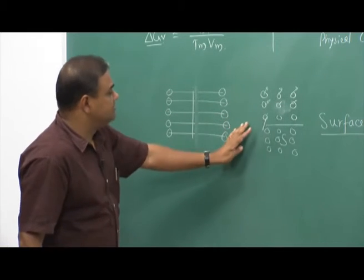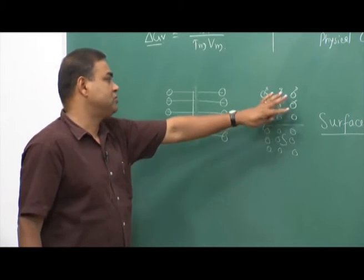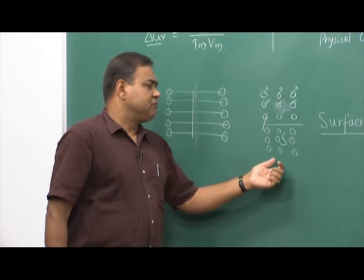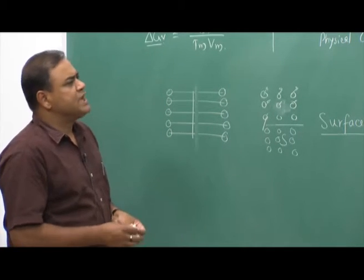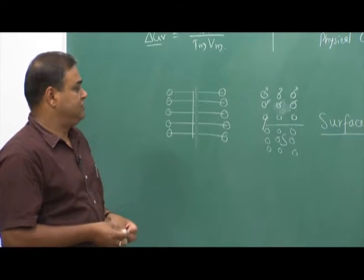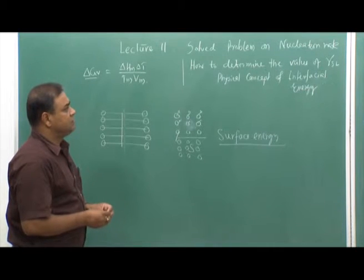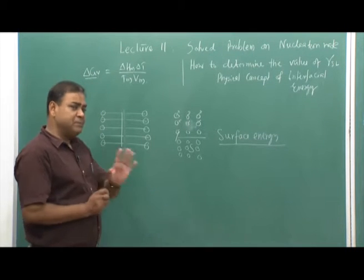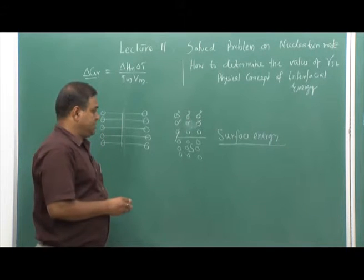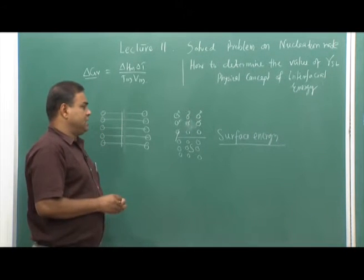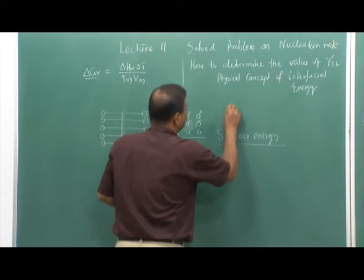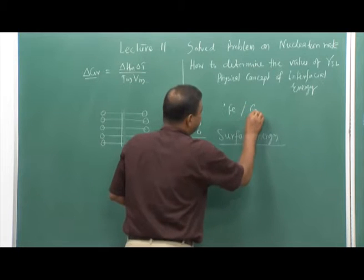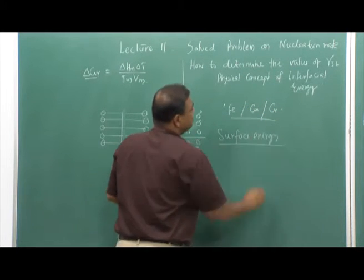To understand the physical aspects of surface energy, we need to understand the structure of solids. Since we are focusing on metals and alloys — starting with single-component metal solid-liquid transformation — let us consider simple metals. We will not take very complicated metals, but for example iron (important for steel in heat treatment), copper, chromium, and similar commonly used engineering metals.